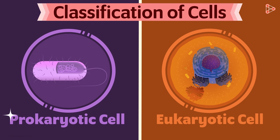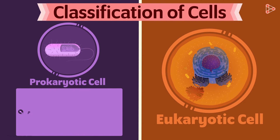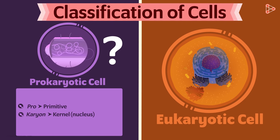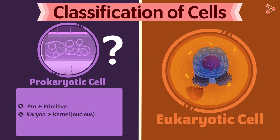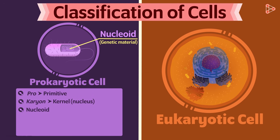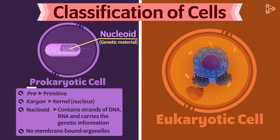To begin with, the name prokaryotic helps us understand its structure. The term 'pro' indicates primitive and the term 'karyon' refers to kernel, which means nucleus in this case. So these cells have a primitive type of nucleus — they do not actually have a proper, well-defined nucleus. Can you see these thread-like structures scattered in the cytoplasm? This is the genetic material named nucleoid. The nucleoid is analogous to the nucleus in our cells; it has strands of DNA and RNA and contains the genetic information of the cell. The only difference is that the nucleoid does not have a compact shape and mainly lacks a proper membrane.